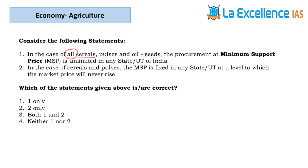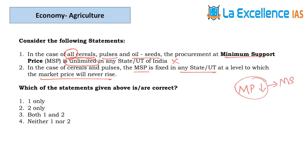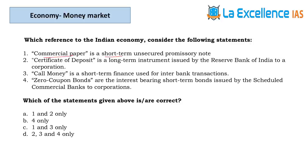The next question is about Minimum Support Price. Statement 1 — procurement at MSP for all cereals, pulses, oilseeds is unlimited in any state. Nothing can be unlimited — extreme assertive statements should be avoided. Statement 2 — for cereals and pulses, MSP is fixed at a level to which market price will never rise. We set MSP so when market price falls, the government buys at MSP; if MSP is kept at the highest level the market can never reach, the whole purpose of MSP is defeated. Statement 2 is also wrong. Answer is D.